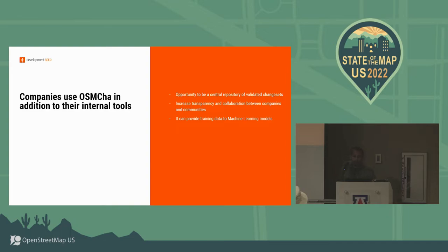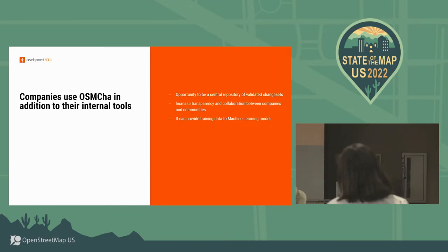For companies that use OSMCHA, in addition to internal tools, it's an opportunity to have a central repository of validated changesets, which companies can share. It can also increase transparency and collaboration between companies and communities — anyone can view what any other user reviewed and reach consensus about quality. It also opens the possibility of providing training data for machine learning models and making the review process faster and easier.